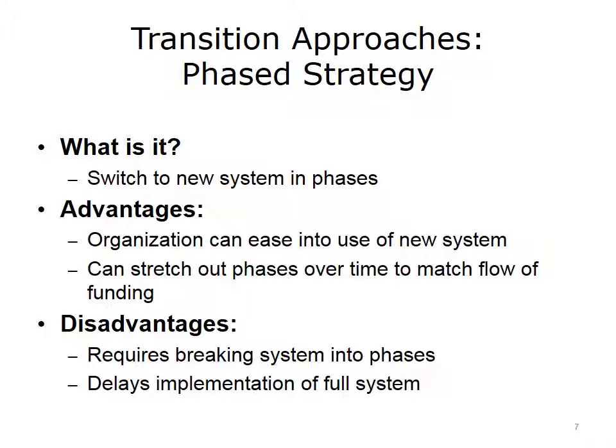The funding and staff may be appropriate for transitioning a phase at a time but not enough for implementing the entire system at once. One suggestion is to follow the patient flow. If the patient is admitted into certain units or areas and discharged from other areas, then those areas should come up together, so that one unit does not have to deal with working in both systems. An example is that you may want all of your surgical areas, both pre- and post-surgical units, to go live on the system at the same time.